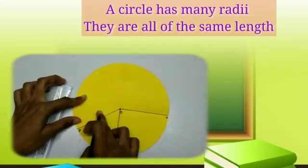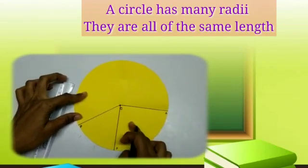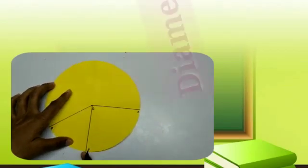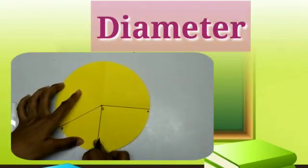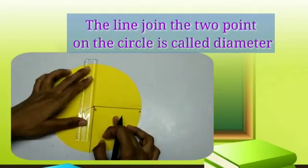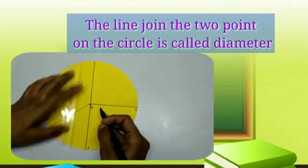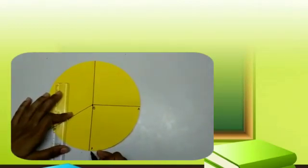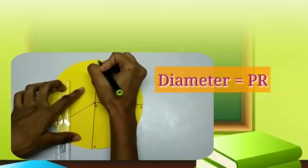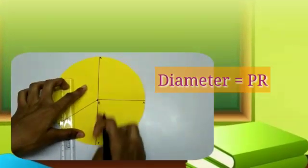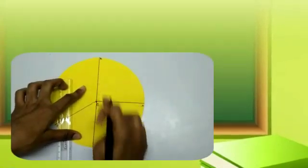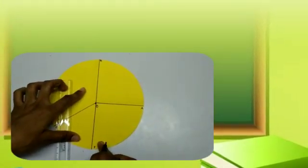Now, the line that touches two points on the circle is known as diameter. For example, B and R. This is the diameter of the circle which touches two points on the circle. Similar way, we can draw many diameters.